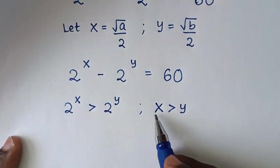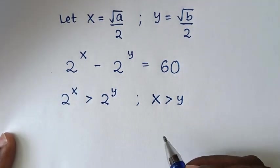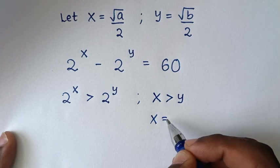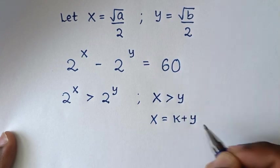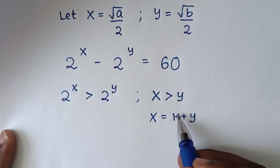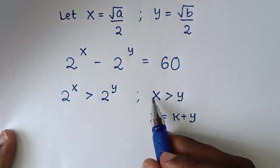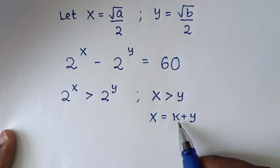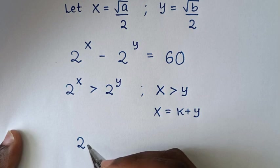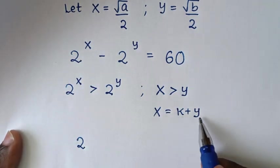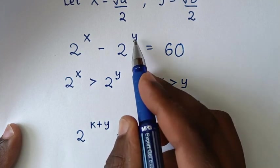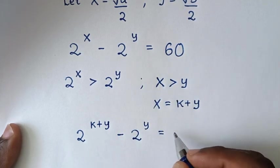Now, given the relation between x and y — if x is greater than y — we'll let x equal to k plus y, because x is greater than y, so the difference between x and y is k. Then from the equation, 2 power of x becomes 2 power of k plus y, minus 2 power of y, is equal to 60.